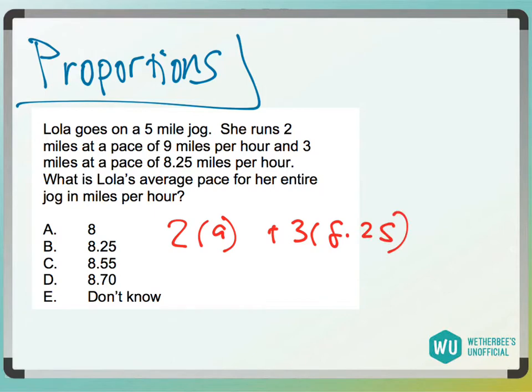So what we have to do is average these rates. You have to figure out what portion she's doing each one at. So it's a total of 5 miles.